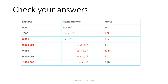0.05 can be written as 50 times 10 to the minus 3 in standard form, or 50 milli. 0.0008 can be written as 8 times 10 to the minus 6 in standard form, or 8 micro. 2.4 mega is 2,400,000 or in standard form 2.4 times 10 to the power of 6.